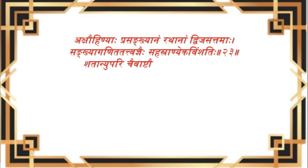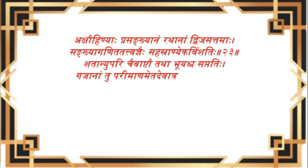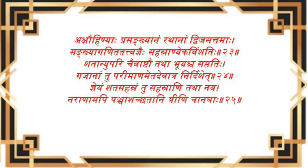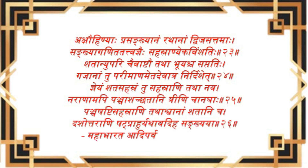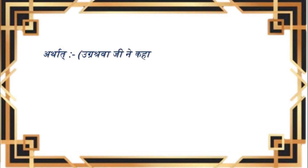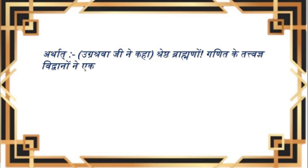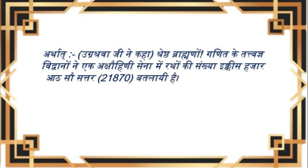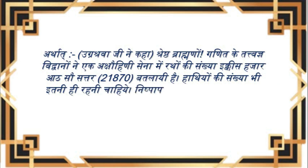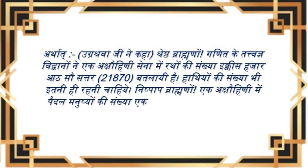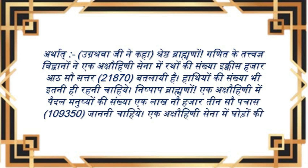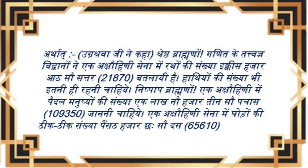9. अक्षोहिनी (10 अनीकिनी) = 21,870 गज + 21,870 रथ + 65,610 घुड़सवार + 1,09,350 पैदल सिपाही। महाभारत के अनुसार एक अक्षोहिनी सेना में: हाथी 21,870, रथ 21,870, घुड़सवार 65,610, पैदल सिपाही 1,09,350।